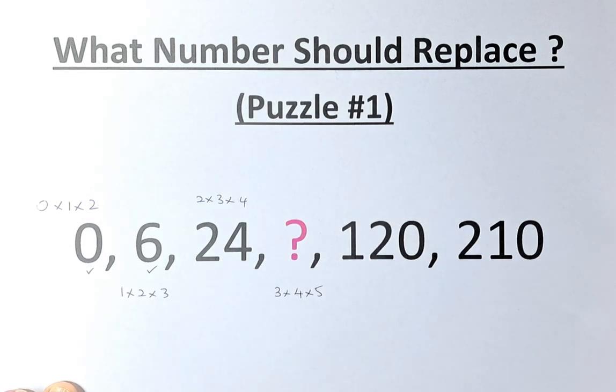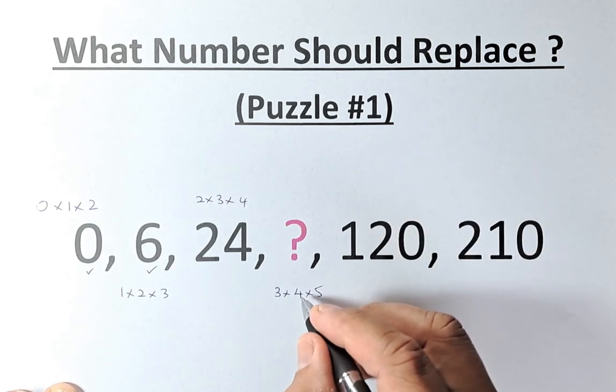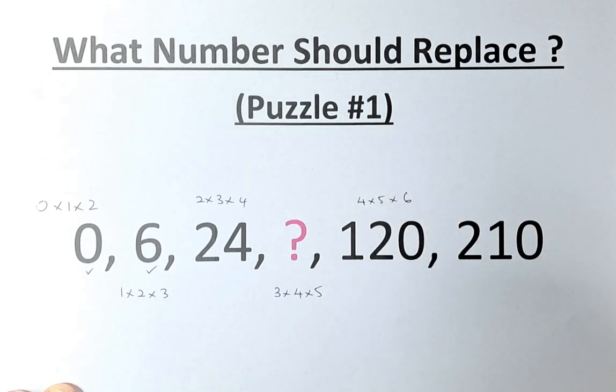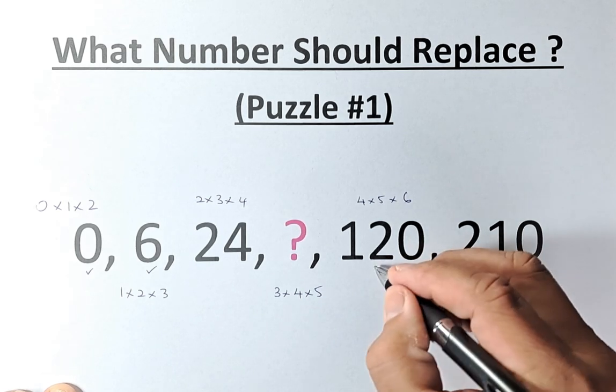So the question mark is going to be 3 times 4 times 5. We'll leave the answer for later, and we're going to go on to 120. 120 is going to be 4 times 5 times 6. 4 times 5 is 20. 20 times 6 is 120.